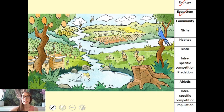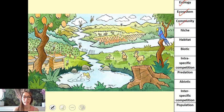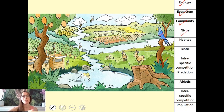The community is all of the organisms of all the different species — the birds, the trees, everything you can see there, and also things you can't see, like bacteria, fungi and microorganisms, which are also part of that community. The community is just the living organisms. The niche is the role of an organism within its environment.